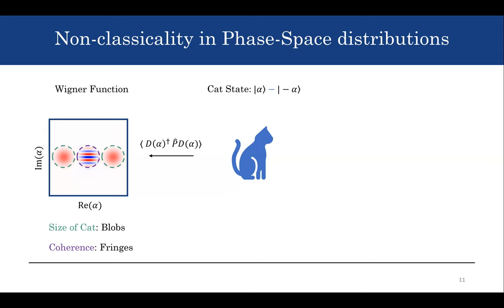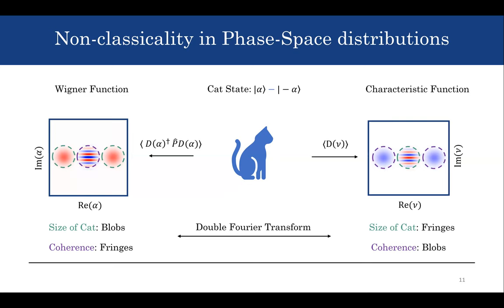Luckily, there's another representation called the characteristic function. It can be defined as the expectation value of the displacement operator, or equivalently as the Fourier transform of the Wigner function. In the characteristic function, the size of the cat is encoded in the fringes in the middle, while the coherence is encoded in the blobs. For this study, we focus on the amplitude of those coherence blobs as our metric to observe over time and assess whether we can prolong the coherence.